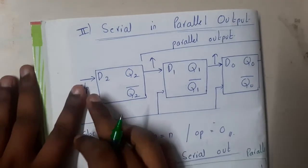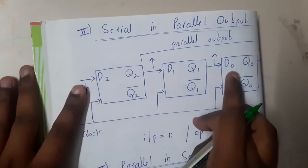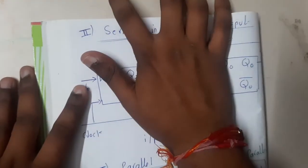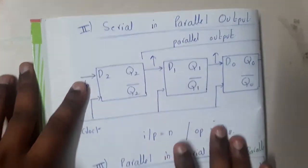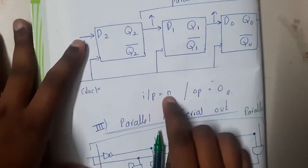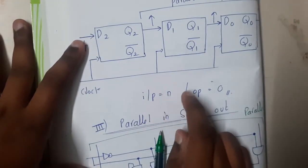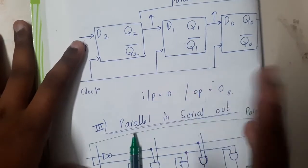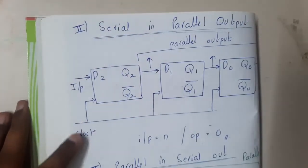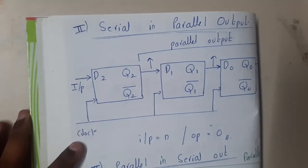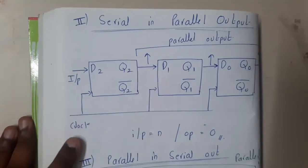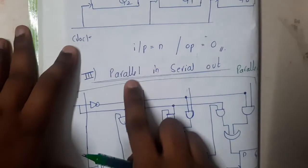The next type is Serial In Parallel Out. Here you send bits inside one at a time, but you can read all outputs simultaneously in a single step — no extra clock needed for output, because all bits are already in their slots. So you need n clocks for input and zero clocks for output.